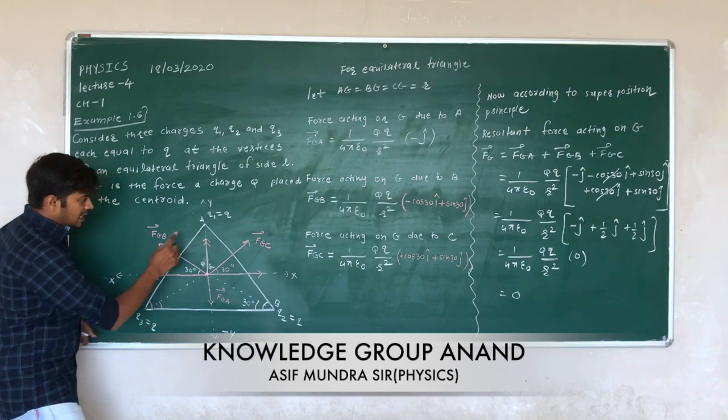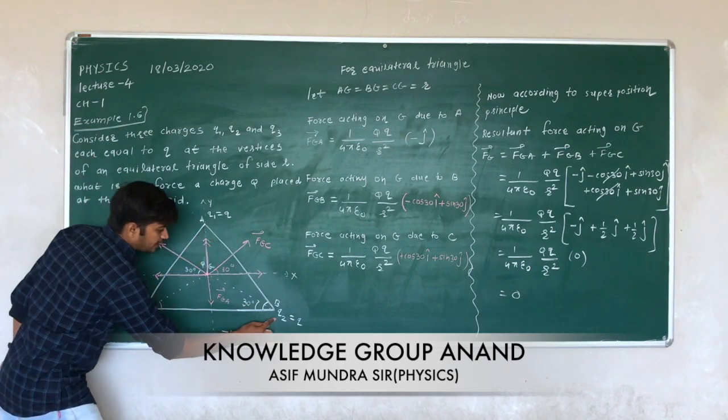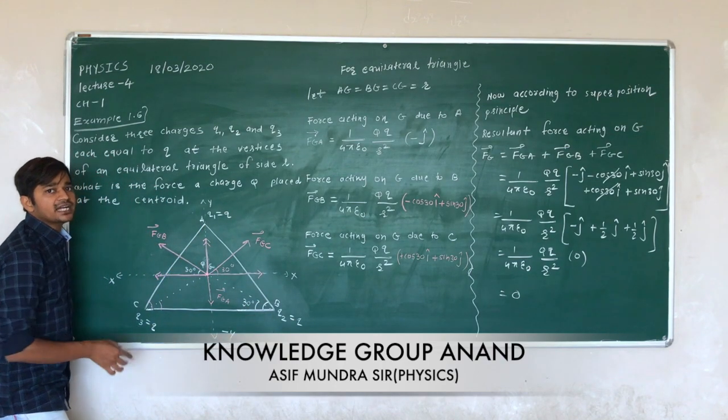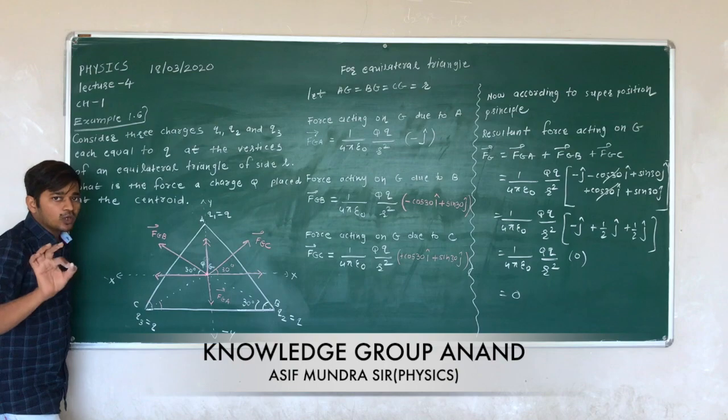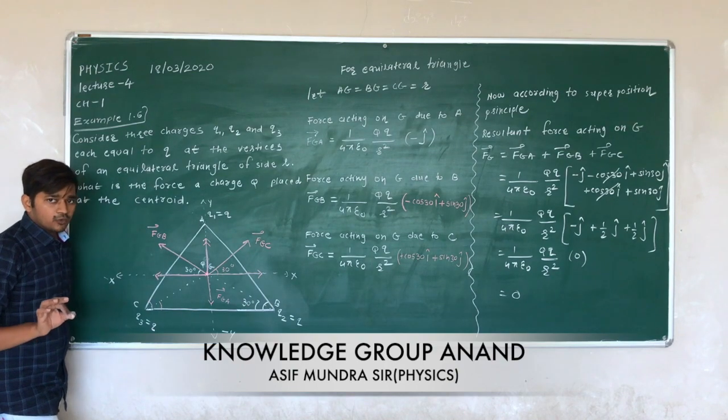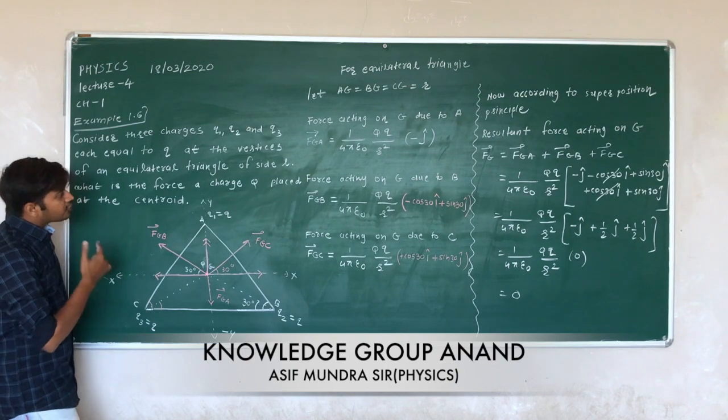This result holds if the charges on the vertices are equal — the net force on the central charge is zero.